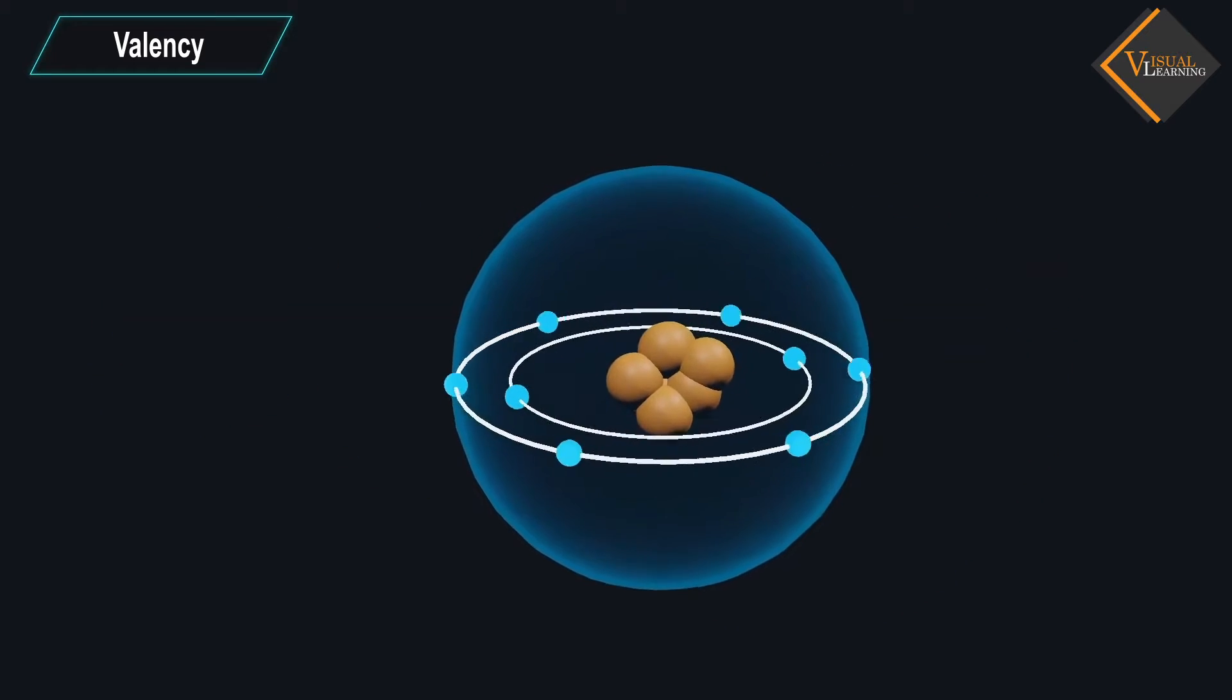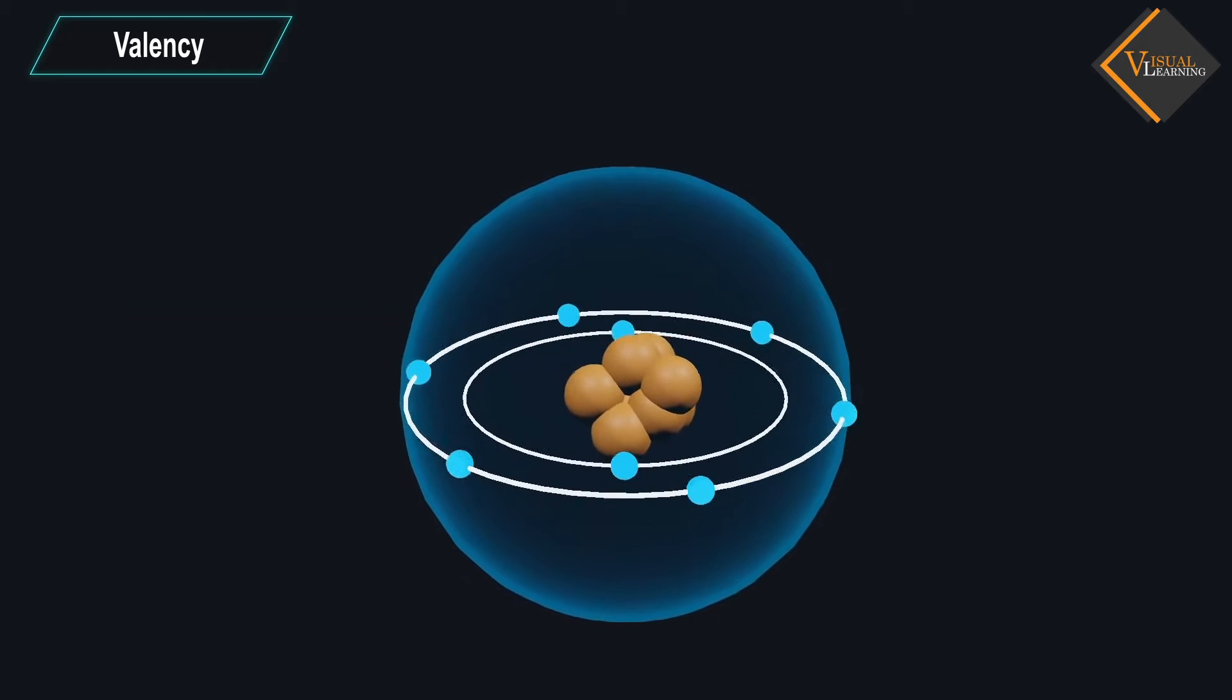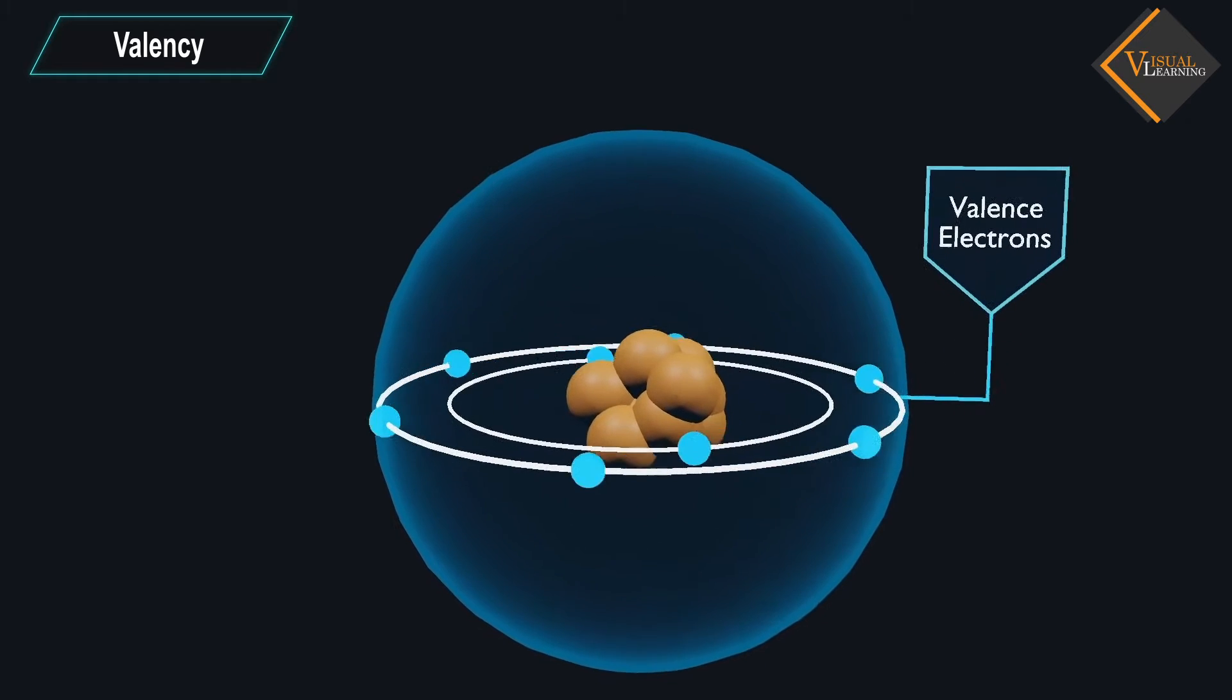The electrons present in the outermost shell of an atom are known as the valence electrons.